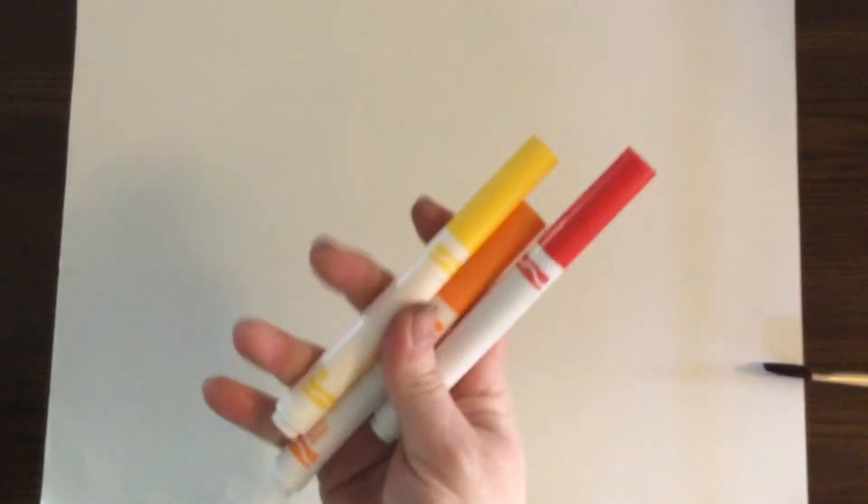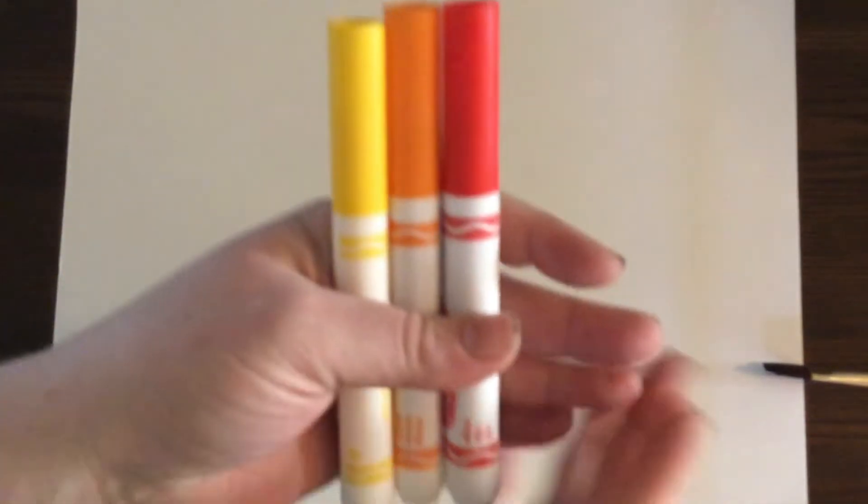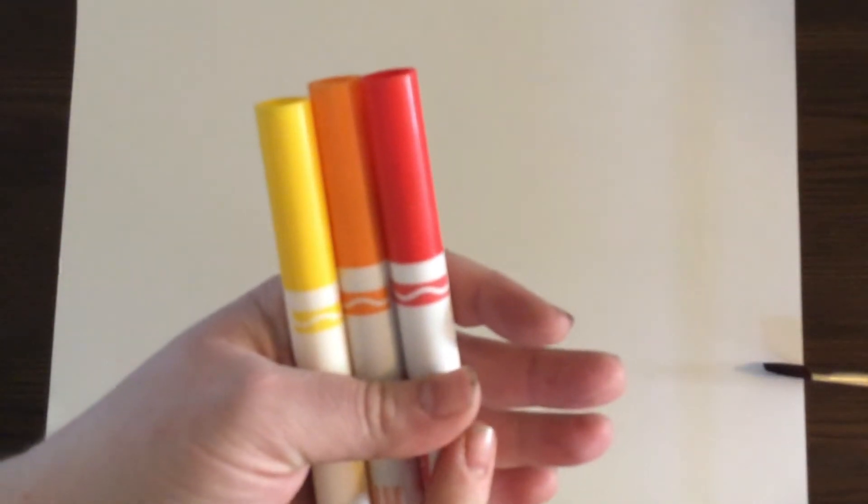Alright guys, we're going to do a color wheel with watercolor, but we're just going to use Crayola markers. Any type of water-based marker works—they don't have to be Crayola, they can be Rose Art, but if they're Sharpies it won't work. Just make sure it's a water-based marker, that's why this works.